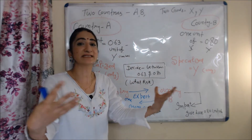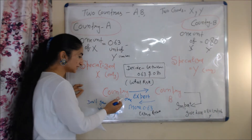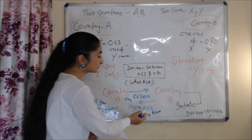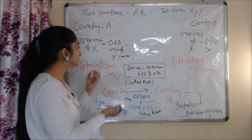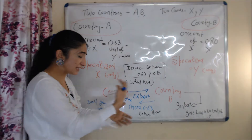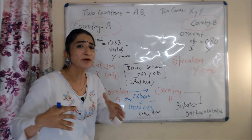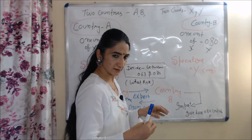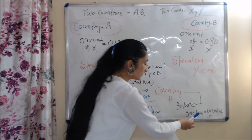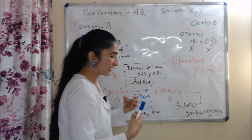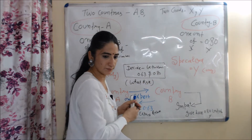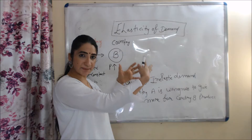Now international trade starts, but at what rate will both countries exchange goods? If country A exports one unit of X to country B, in return it expects to receive more than 0.63 units of Y, because in their home country they can already get 0.63 units of Y for one unit of X. Similarly, country B expects to give less than 0.80 units of Y when importing one unit of X. So the exchange rate will be decided between 0.63 and 0.80.